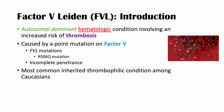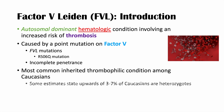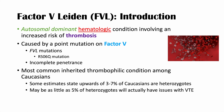Factor V Leiden is the most common inherited thrombophilic condition among Caucasians — the most common inherited condition involving an increased risk of clotting. Some estimates state that three to seven percent of Caucasians are heterozygotes for this condition. Being a heterozygote means having one affected allele, which doesn't necessarily mean symptoms due to incomplete penetrance, but it means they could pass it to offspring. As few as five percent of heterozygotes will actually have issues with venous thromboemboli.